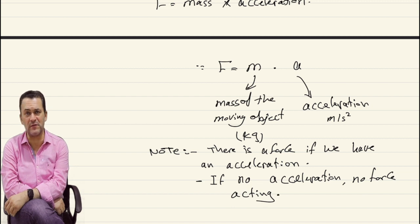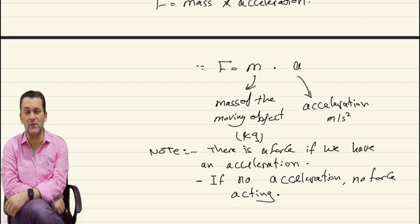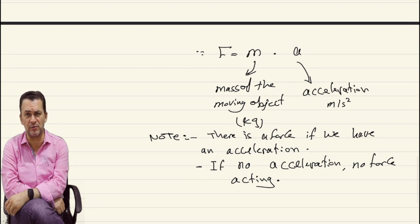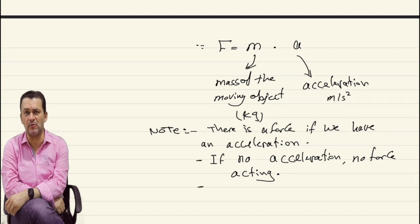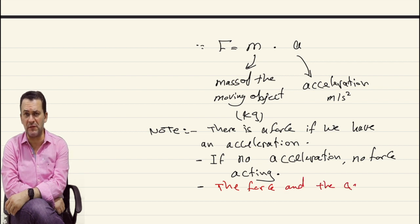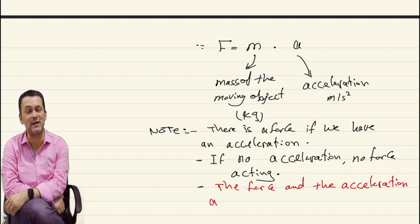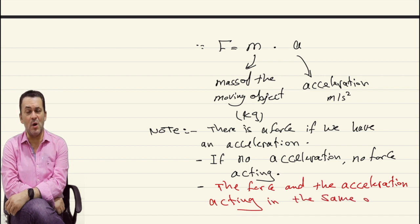Keep in mind: force and acceleration both act in the same direction. For example, if the force is positive, it means the acceleration is positive. If the force is negative — due to a difference in direction — it means the acceleration is negative in the same way. So both force and acceleration act in the same direction. That was the second law of Newton.